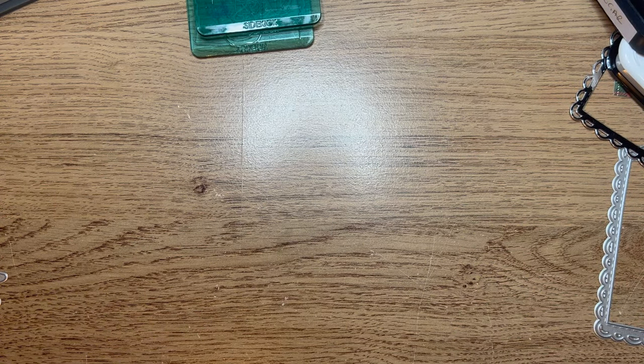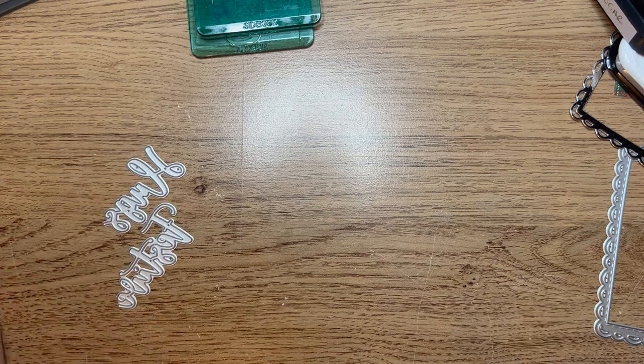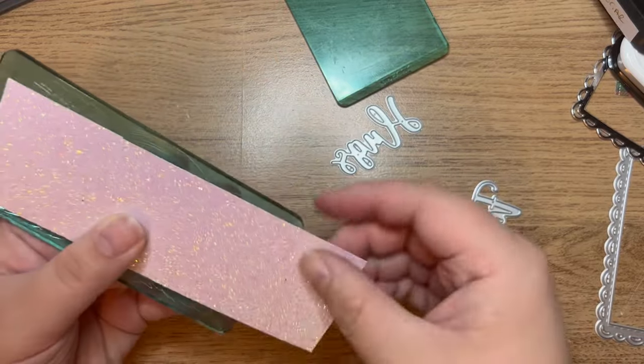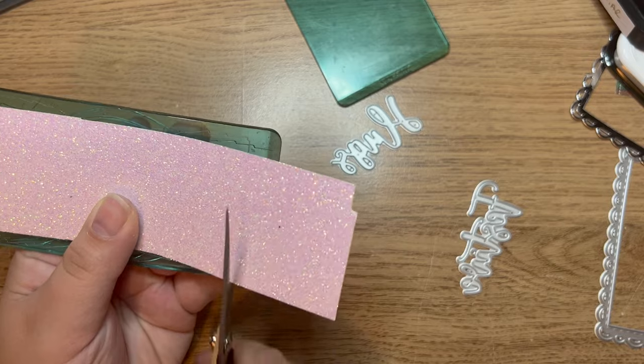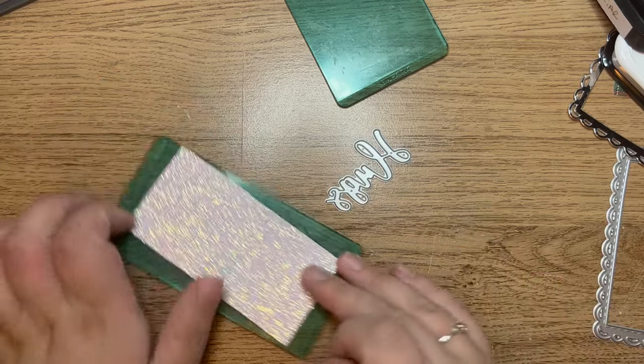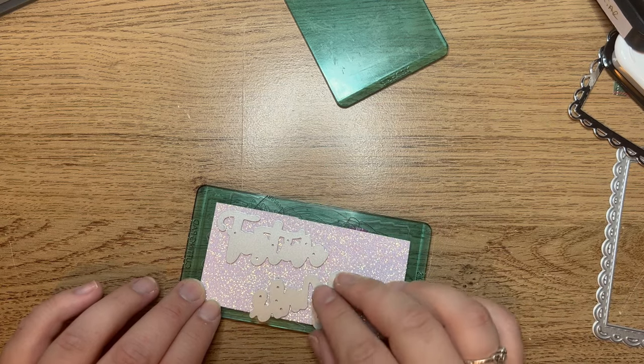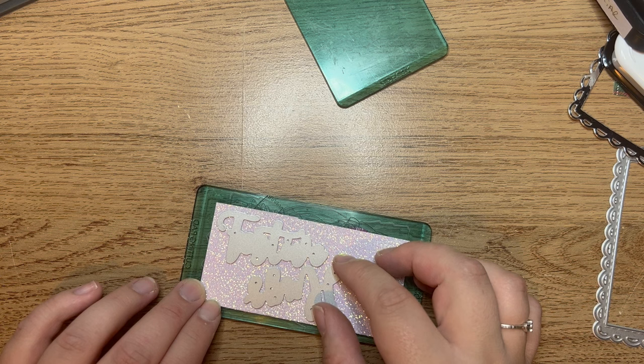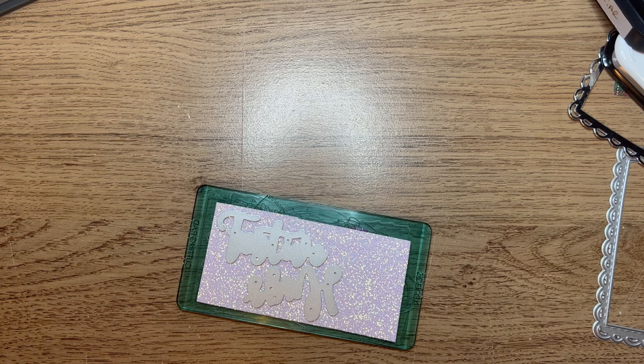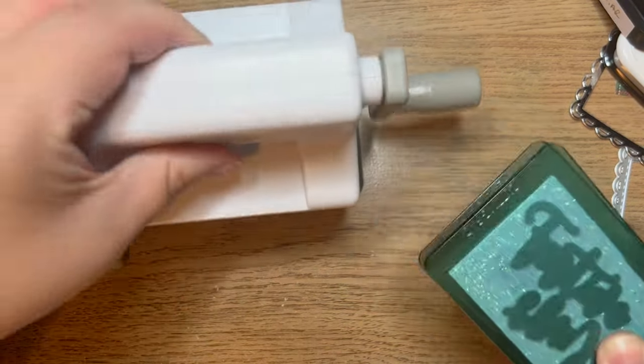The next step, I'm going to die cut out the sentiments so they're ready to go. I'm taking my scrap piece of glitter card and I'm going to cut this down because I don't need all of that. I'll pop that back in my scraps box because you never know when it's going to come in handy.